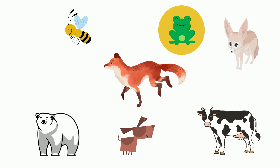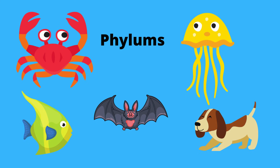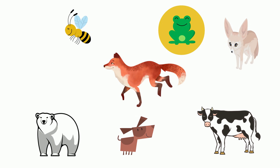Next is phylum. There are dozens of phylums. Some examples include arthropods, which are crabs; cnidarians, which are jellyfish; and chordata, which includes dogs, bats, and fish. Foxes belong under the phylum chordata because they have a spinal cord. This eliminates the insect, because they have an exoskeleton and no spinal cord.